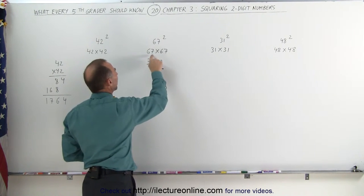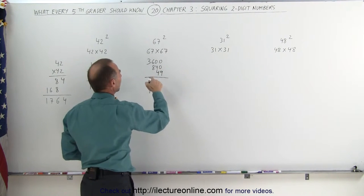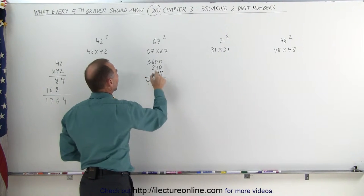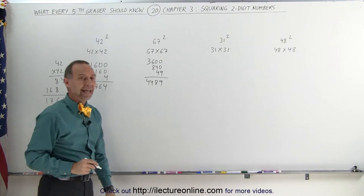And finally, you add 7 times 7, which is 49. So now you see that 36 plus 8 is 44. And 4 plus 4 is 8. And a 9 gives you 4,489.